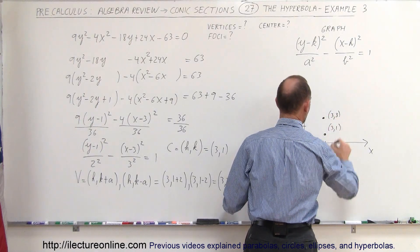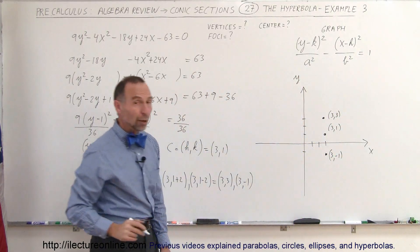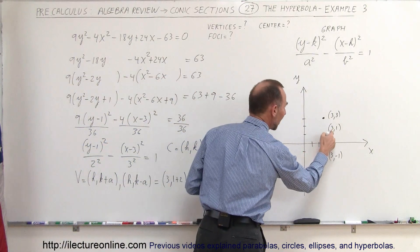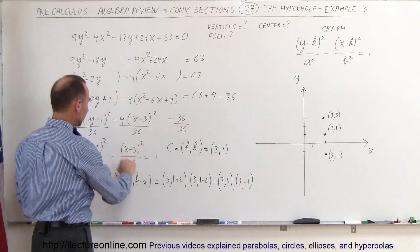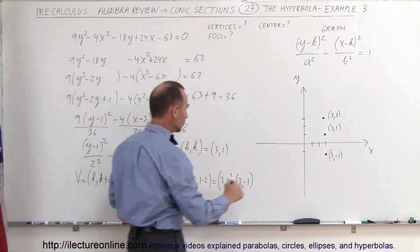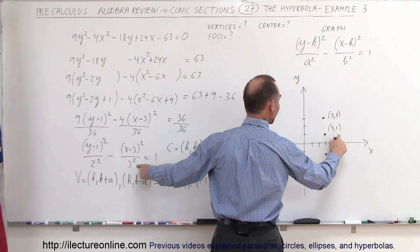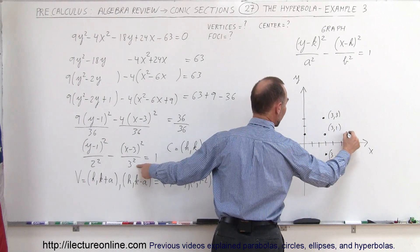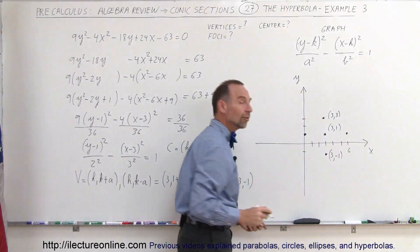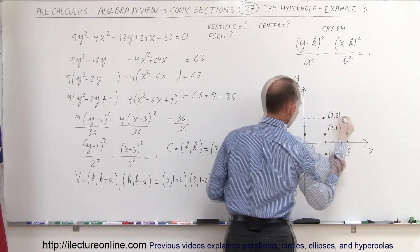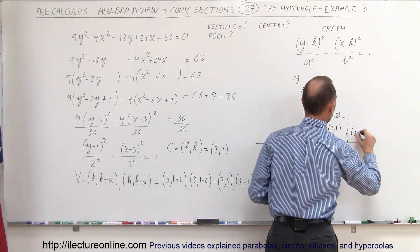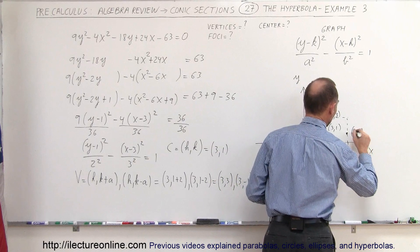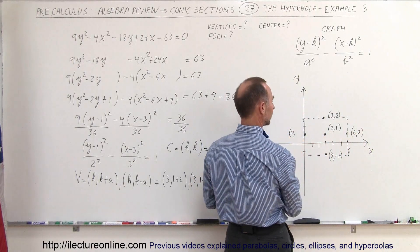We also need the two horizontal points that make up the reference box. We add and subtract b from the x value. Since b equals 3, we get 3 minus 3 equals 0 and 3 plus 3 equals 6. So the horizontal box points are at (6, 1) and (0, 1) — those are the other two points needed to draw the box.